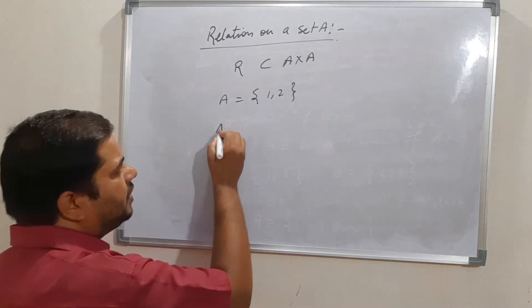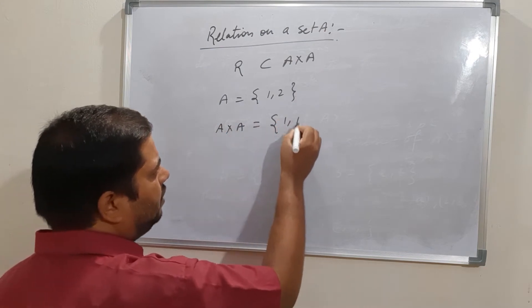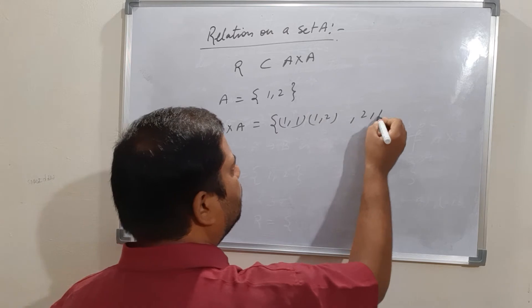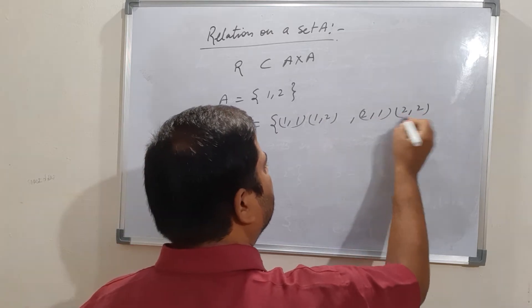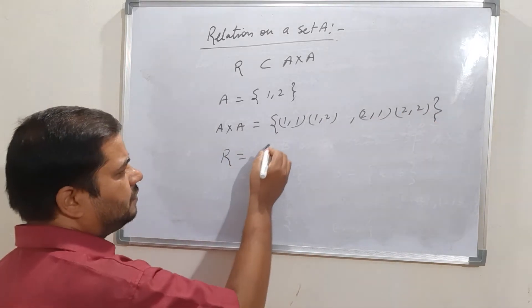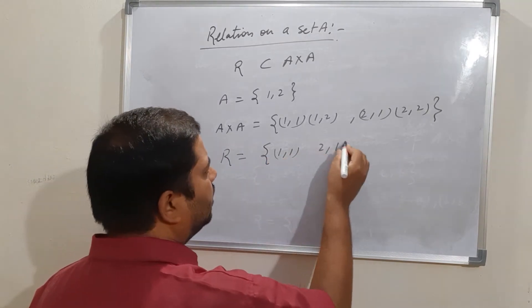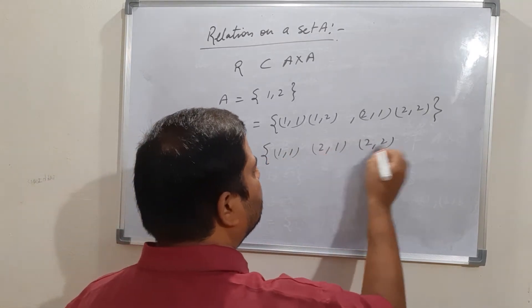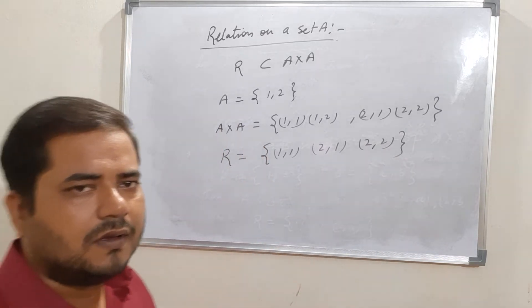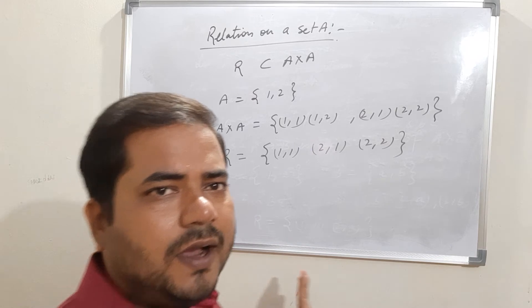Then A cross A equals {(1,1), (1,2), (2,1), (2,2)}. Any subset of this — for example {(1,1), (2,1), (2,2)} — is a relation, and this is nothing but a relation on a set.